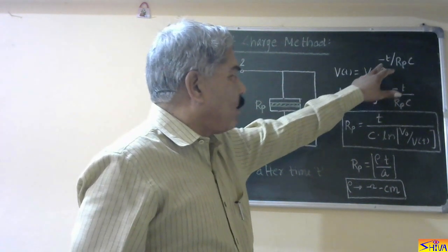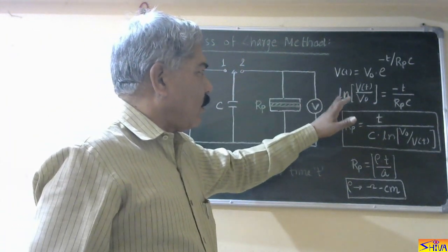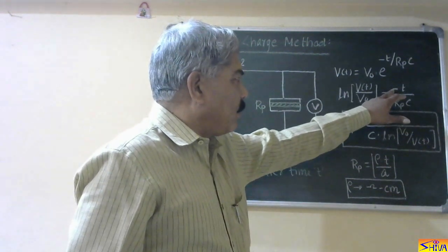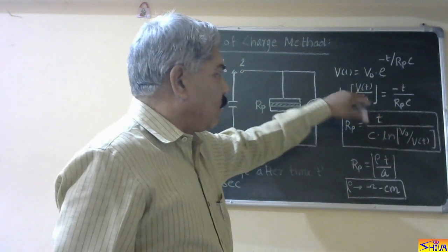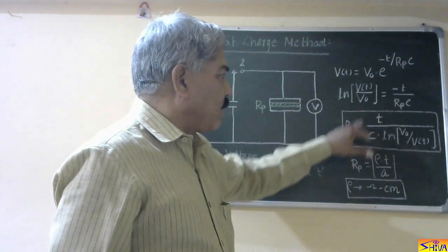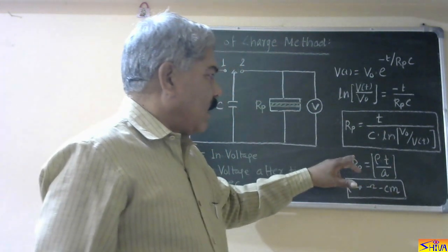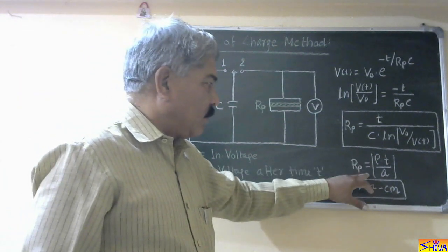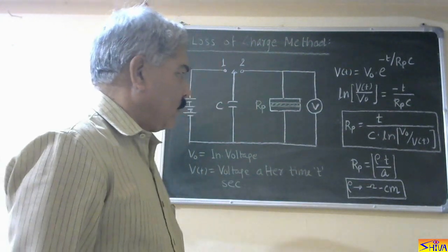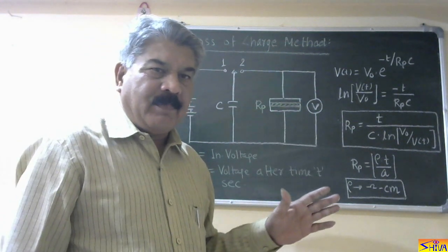The formula for capacitor voltage is: Vt equals V0 times e to the power minus T upon Rp times C, where C is the capacitance. Taking the natural log and rearranging, we get Rp equals T upon C times ln(V0 upon Vt). If we want to find volume resistivity, we use Rp equals rho times t upon A, where volume resistivity is measured in ohm-centimeters. In this way, we measure insulation resistance or DC resistivity by the loss of charge method.